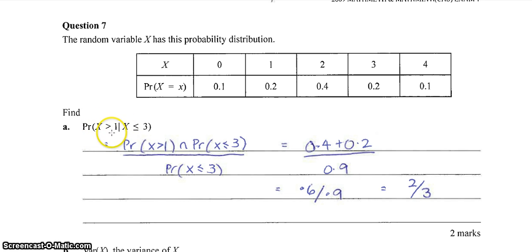So the probability that x is greater than 1, given that it's less than or equal to 3, is the same as the probability x is greater than 1 and is also less than or equal to 3, divided by the probability x is less than or equal to 3. So the probability x is greater than 1 and less than or equal to 3 is going to be the probability that it is either 2 or 3, which is 0.4 plus 0.2 divided by 0.9 gives us 0.6 over 0.9, which simplifies to 2 on 3.